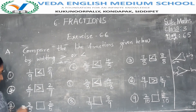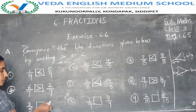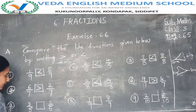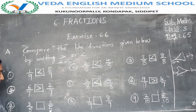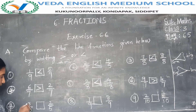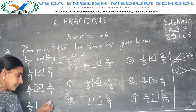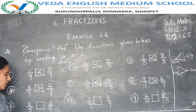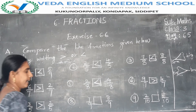Next row: 3 by 5 and 2 by 5. In this fraction the denominators are the same — 5 and 5 — but the numerator changes. Compare the numerators: 3 is greater than 2. So in this box, greater than.